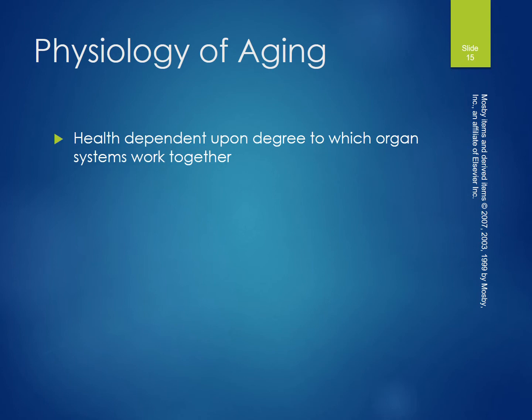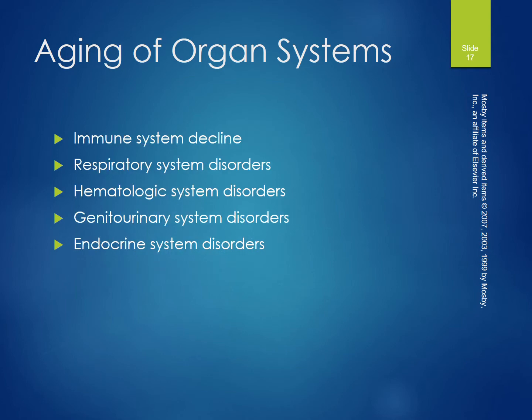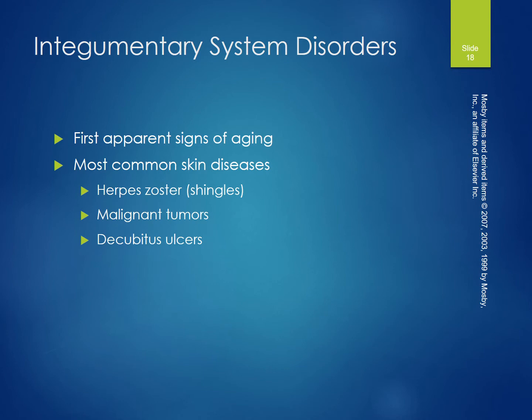Physiology of Aging: Health is dependent upon the degree to which organ systems work together. Aging affects the integumentary system, nervous system, sensory system, musculoskeletal system, cardiovascular system, gastrointestinal system, immune system, respiratory system, hematologic system, genitourinary system, and endocrine system.